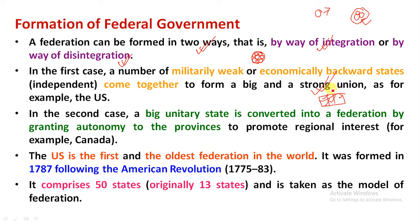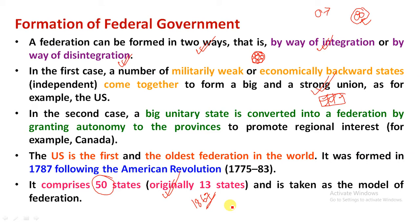The US is called the first and oldest federation. The American Revolution took place between 1775 and 1783, and the federal government was established in 1787. The US federation was confirmed by way of integration, and Canada was confirmed by way of disintegration.